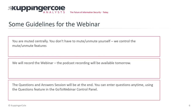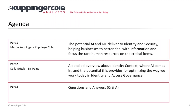Let's look at today's agenda. I'll talk about the potential that AI and ML — artificial intelligence and machine learning — deliver to identity and security, helping businesses better deal with information and focus rare human resources on critical items. Then Kelly Grizzle will give a detailed overview of identity context, where AI comes in, and the potential for optimizing identity and access governance. The third part will be a Q&A session.